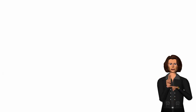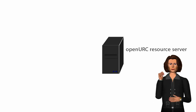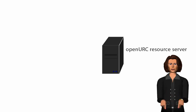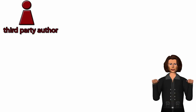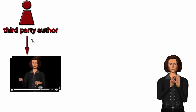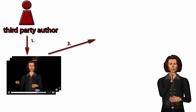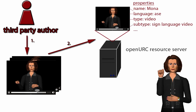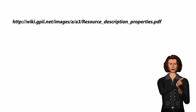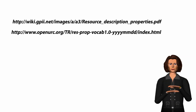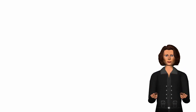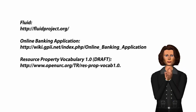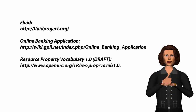The used data like videos are stored on the open URC resource server. Third-party authors can add new videos there. These videos should be described with a list of key value pairs. The resources are specified in the link below. The panel settings are automatically adjusted to the resources available on the server.